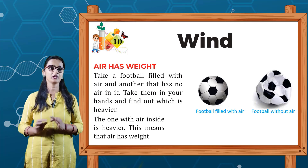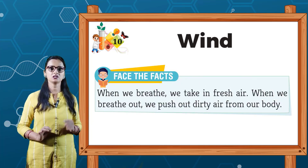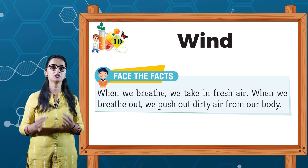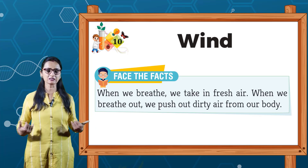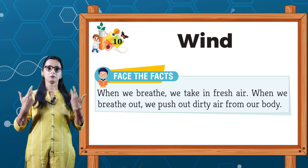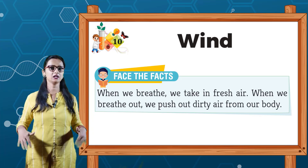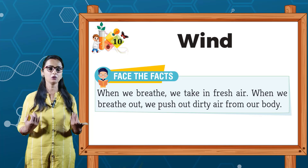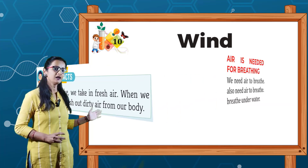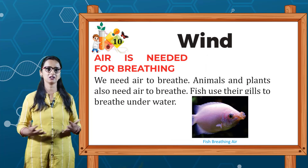Air is needed for breathing. When we breathe, we take in fresh air. When we breathe out, we push out dirty air from our body. Ek baar saans lijiye aur bahar chhodiye. Hum fresh air ko breathe karte hain aur gandi air ko bahar nikalte hain. Jo air hum lete hain usko oxygen kehte hain, aur jo air hum bahar nikalte hain usko carbon dioxide kehte hain. Air humari breathing ke liye zaroori hoti hai.